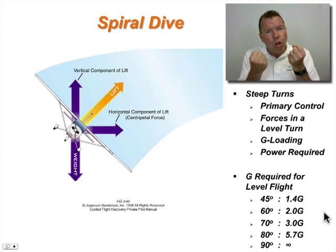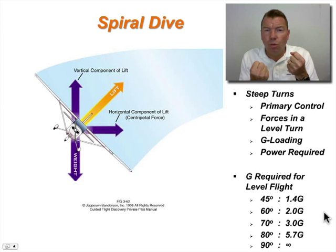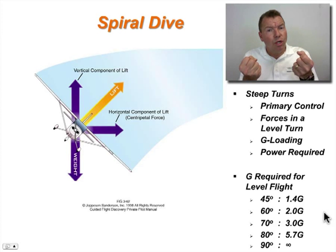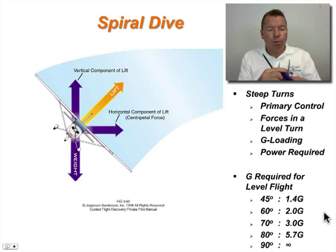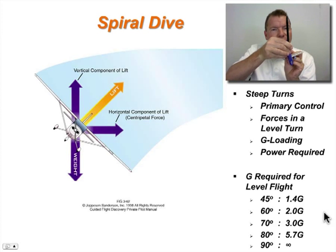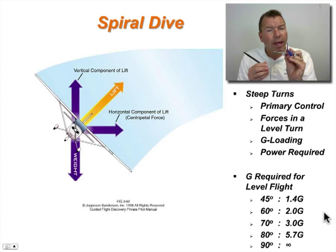Pulling and increasing G-load in a nose-low overbank situation is not necessarily one of the best things to do. We probably should either unload or remain unloaded and then get the airplane reoriented — it's all about reorienting the lift factor and then pulling away from the ground.